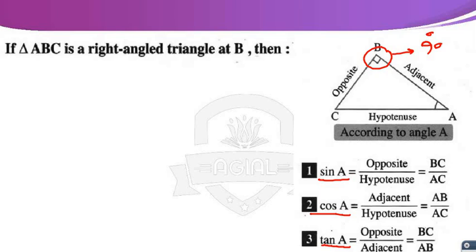Sine of this angle — sine A or sine B — equals the ratio between the opposite side over the hypotenuse side. In the right-angled triangle, with right angle at B, angle B equals 90 degrees. Line segment CA is called the hypotenuse — the line segment opposite the right angle.